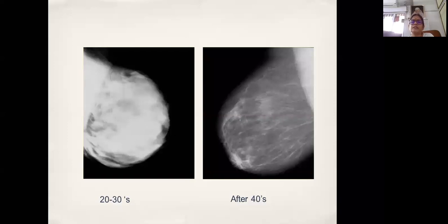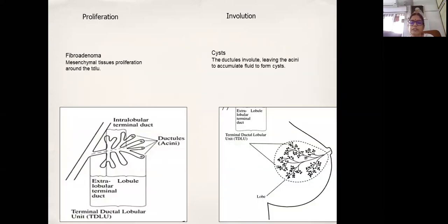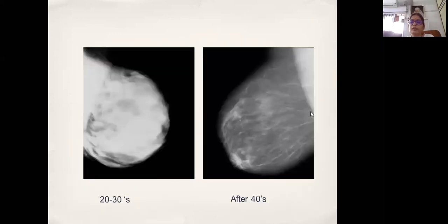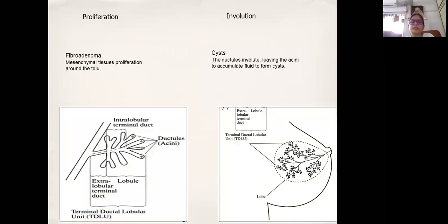As age advances, the fibroglandular tissue involutes and you will see only fibrous strands left, most of it replaced by fat — what we call a fatty breast. In a fatty breast, if there is a malignant lesion or microcalcifications, it's very easy to see. This is why in a woman over 40, a mammogram serves as a good investigation to pick up malignancies.